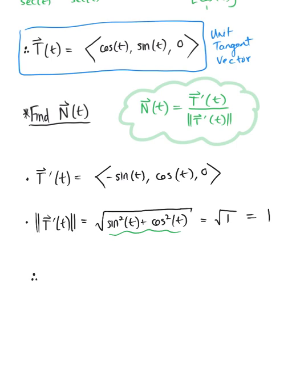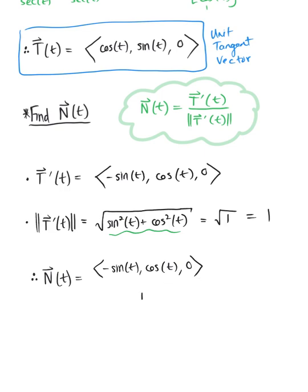We're ready to state the principal unit normal vector. Plugging in what we found, we have ⟨−sin(t), cos(t), 0⟩ all divided by 1 — which we don't really need to write, since dividing by 1 doesn't change anything. So this is our final answer for the principal unit normal vector: N(t) = ⟨−sin(t), cos(t), 0⟩.